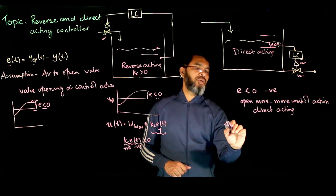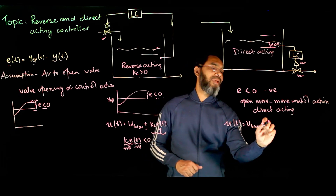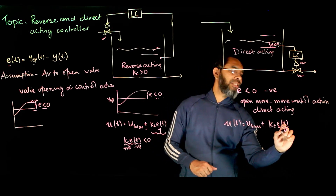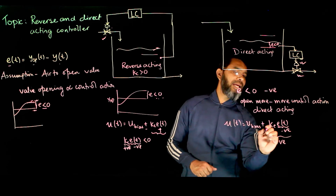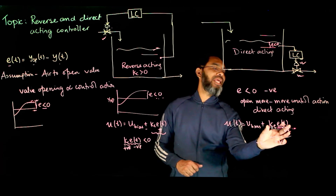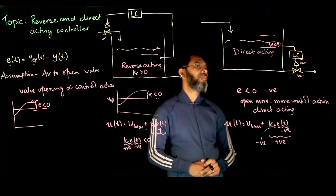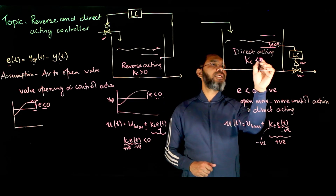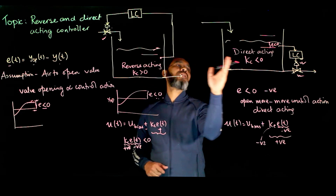Going back to the control action equation: U(t) equals U_bias plus KC times E(t). If the error is negative and the entire KC times E(t) term needs to be positive to open the valve more, then KC must be negative. So for direct acting, KC should be less than zero. Therefore, KC greater than zero means reverse acting, and KC less than zero means direct acting.